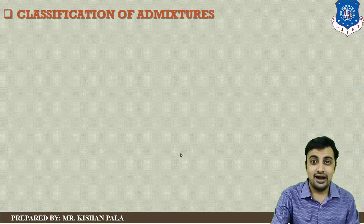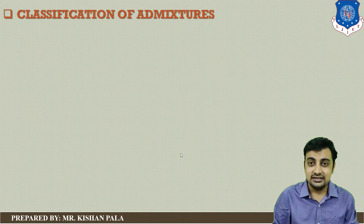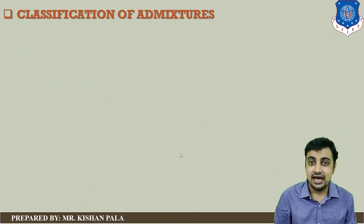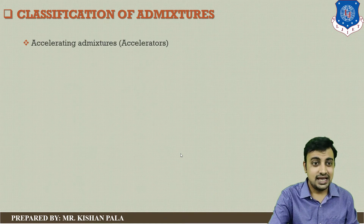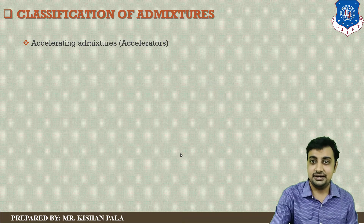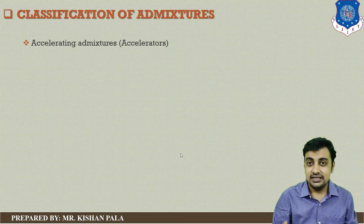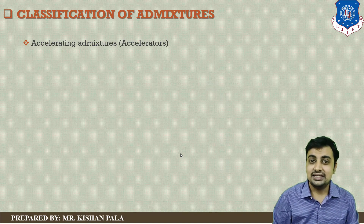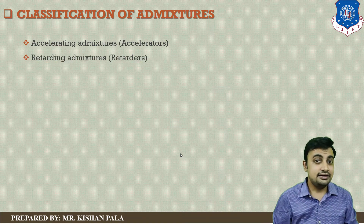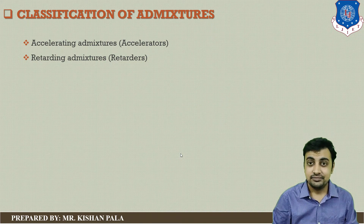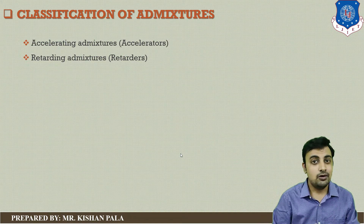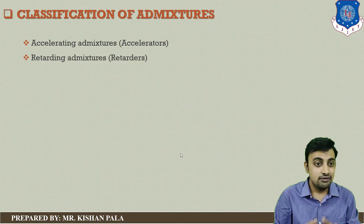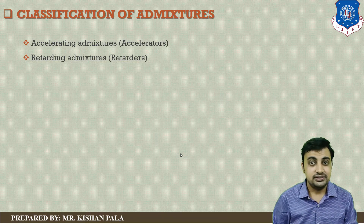Now let us discuss the classification of admixtures. Depending upon the requirement of the site and the properties, you can use different types of admixtures available in different brands, with different doses. For example, if we want to decrease the initial setting time, we use accelerating admixtures. The second type is retarding admixtures, also known as retarders, which increase the initial setting time to allow transportation of concrete from the manufacturer to the site — as used in ready-mixed concrete.